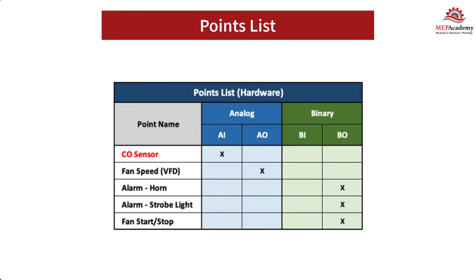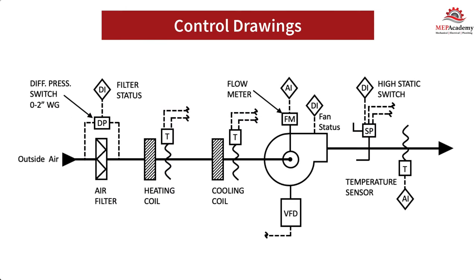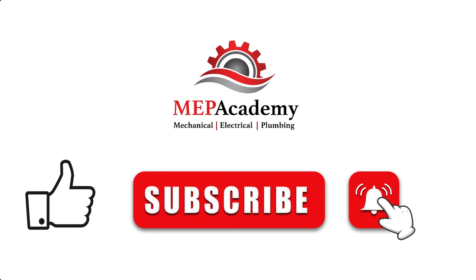Points list: The points list is a quick reference chart that lists all the input and output points required to meet the sequence of operation strategy. You'll find these on commercial construction control drawings. Control drawings provide a schematic diagram of where and how the individual control devices are connected overall.